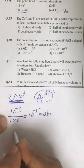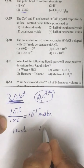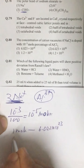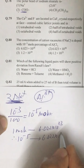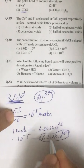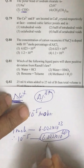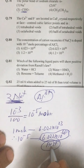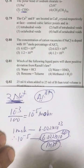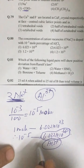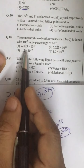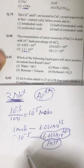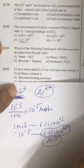We know that 1 mole equals 6.022 × 10²³. Therefore, 10⁻⁵ moles equals 6.022 × 10¹⁸ molecules of Al³⁺. Since one Al³⁺ creates two vacancies, the total vacancies = 6.022 × 10¹⁸ × 2 = 1.2 × 10¹⁹. Question number 80, correct answer is the third option.